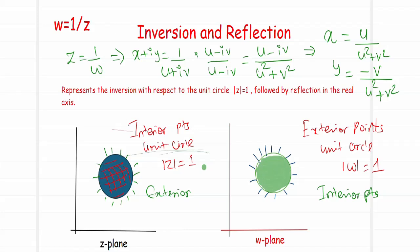To summarize, the three standard transformations are: translation (w = c + z), which causes movement while preserving shape, size, and orientation; magnification and rotation (w = cz); and inversion and reflection (w = 1/z). Thank you.